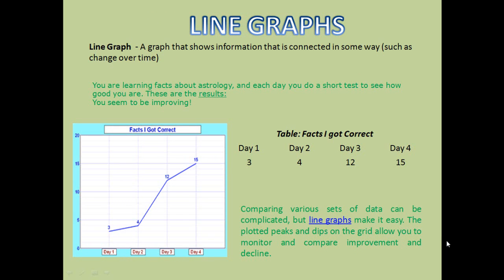Another form of graph is the line graph. It shows information that is connected in some way — for example, change over time. For instance, if you want to track how well you are doing in astrology over day 1, day 2, day 3, day 4, and you plot them with a line, you can compare your growth. Comparing these sets of data can be complicated, but line graphs make it easy. The plotted peaks and dips on the grid allow you to monitor and compare improvement and decline.